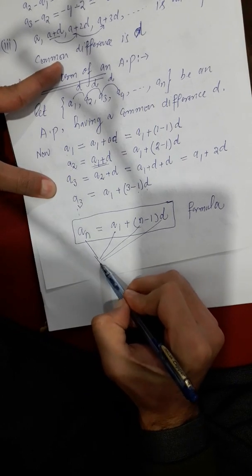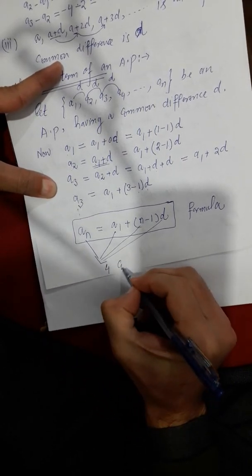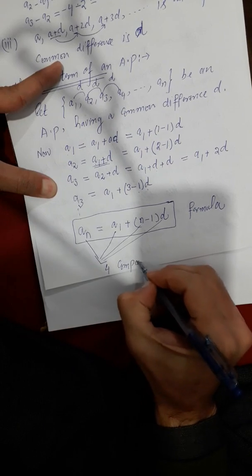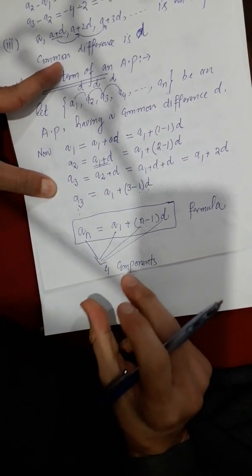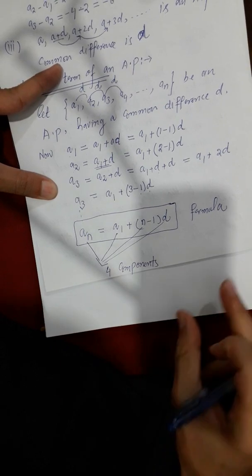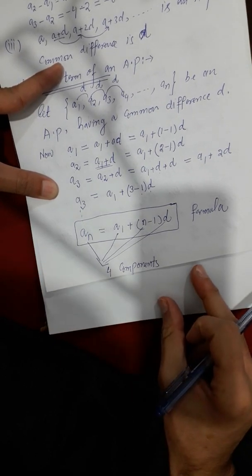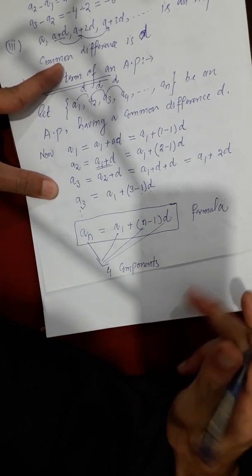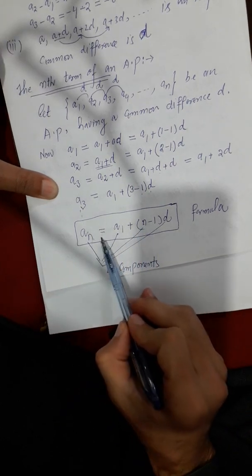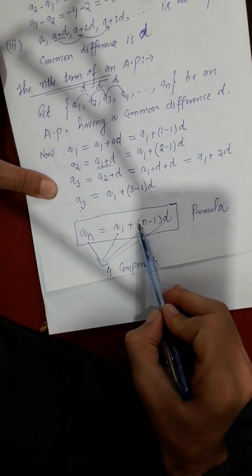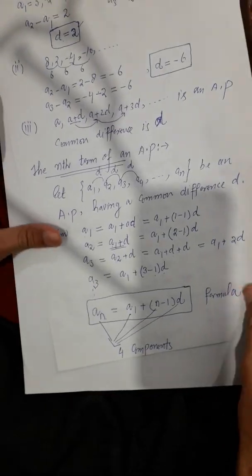D means the common difference. So here we have four components, and if three components are given, one component will be missing. We will use this formula — the general term of arithmetic progression — to solve the exercise questions.